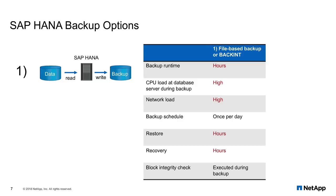As a result, these backup operations are typically scheduled only once per day. And in case of a required restore and recovery operation, the forward recovery can take a significant amount of time since you have to apply many logs during the forward recovery with just a single backup once per day. So the RTO is typically in a range of multiple hours. The block integrity check, which is an operation that checks for block corruptions in the database, is executed during the backup run with each file-based backup or back-end backup.